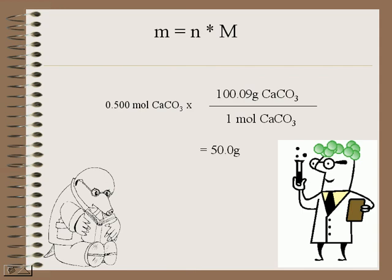If we want 0.500 moles of calcium carbonate, we simply multiply 0.500 moles by the molar mass, which is 100.09 grams per mole, to get 50 grams.